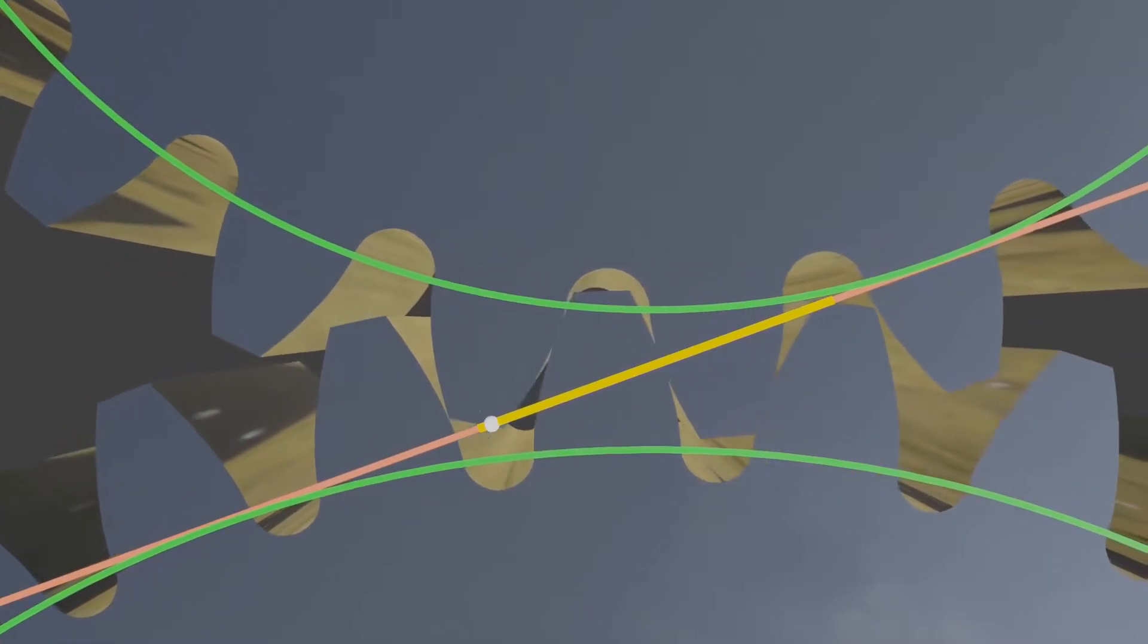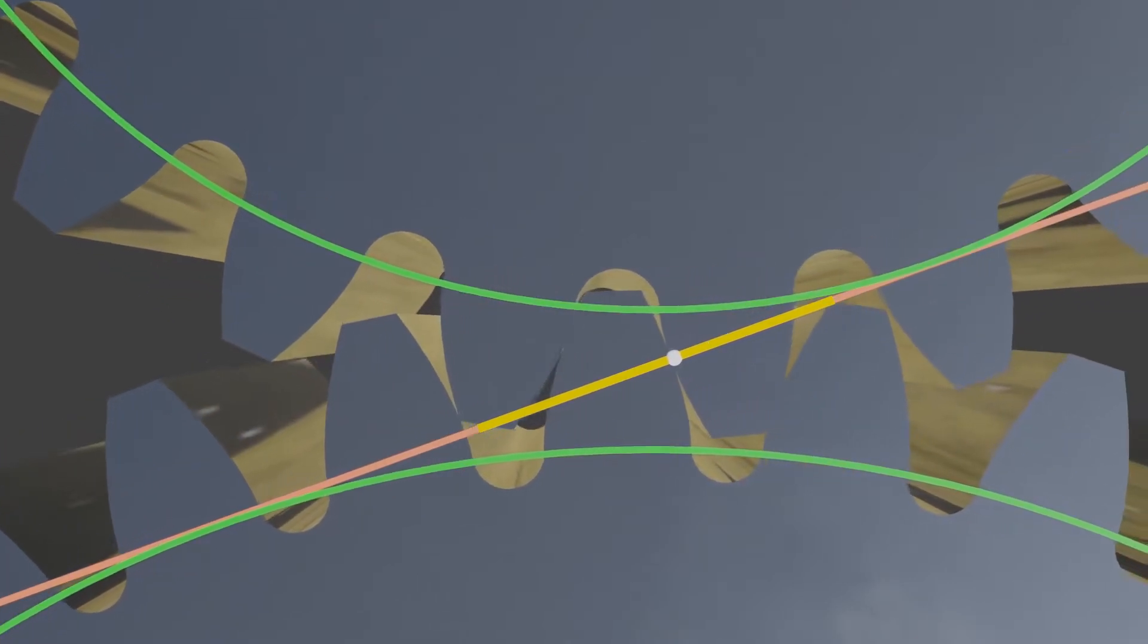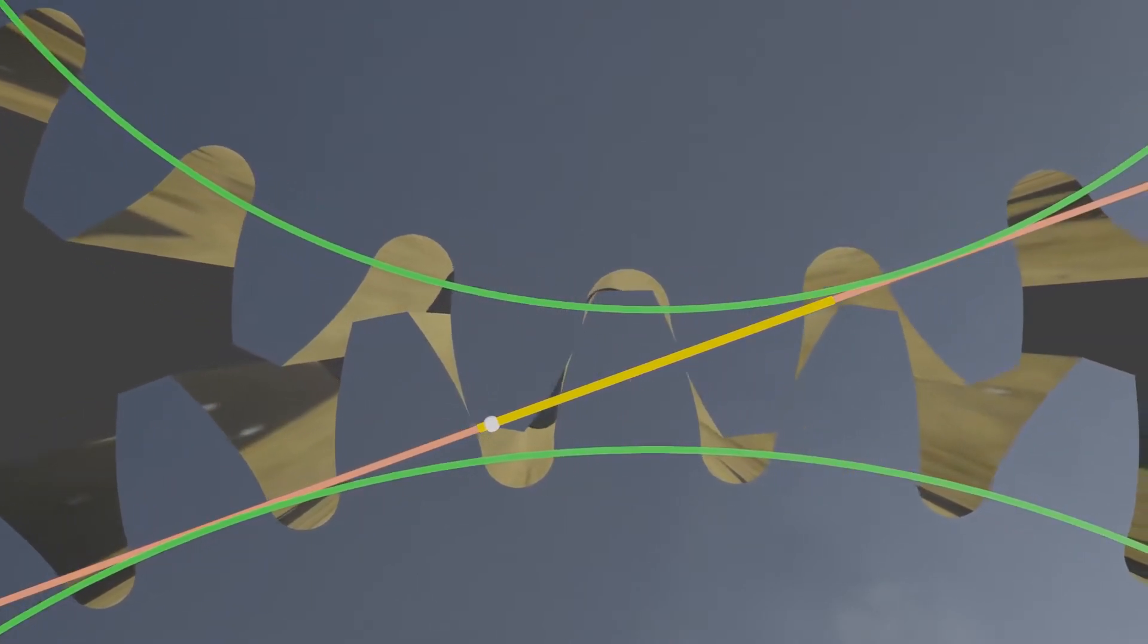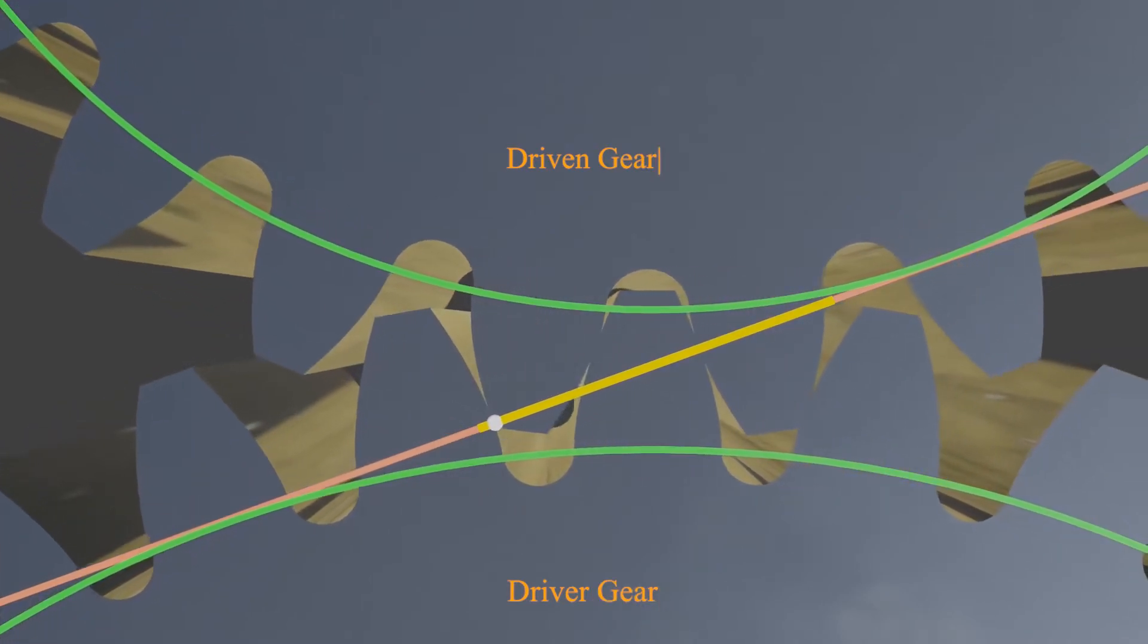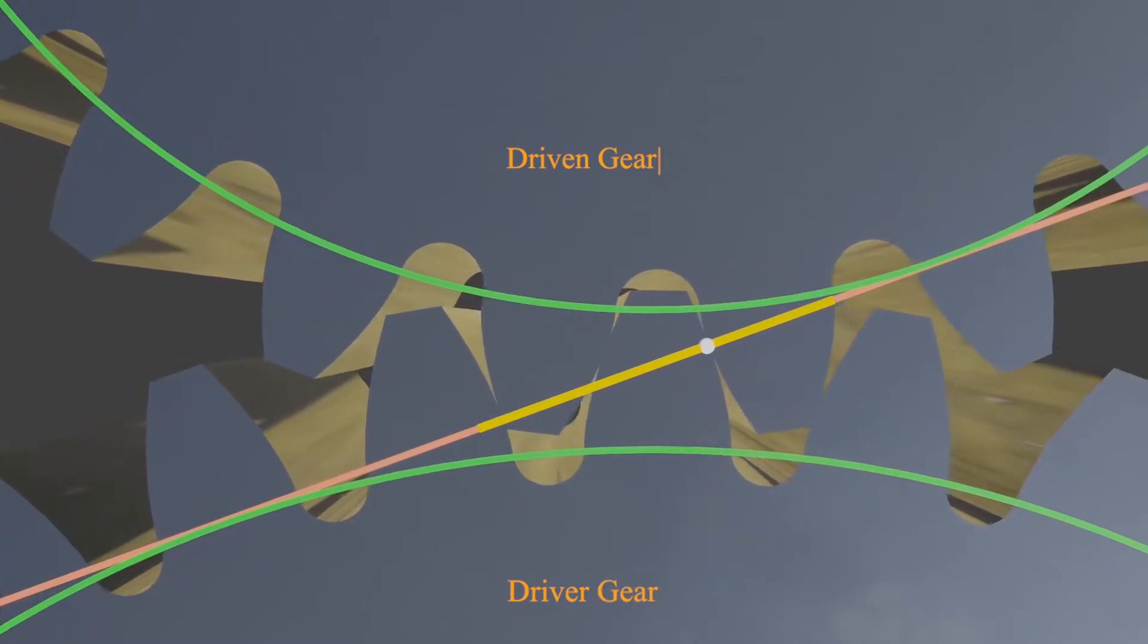When two gear teeth are in mesh and are transmitting power, the force transferred from the driver to the driven gear tooth acts in a direction along the line of action.